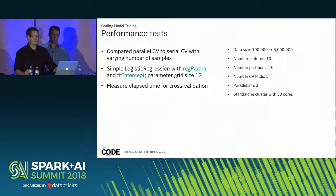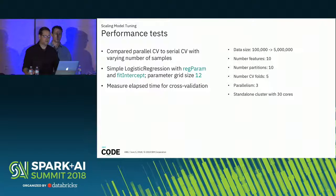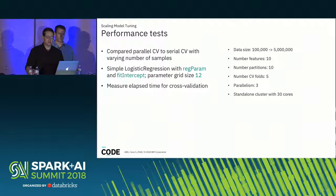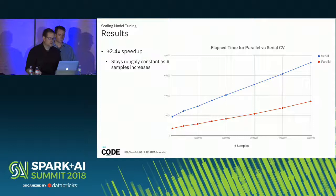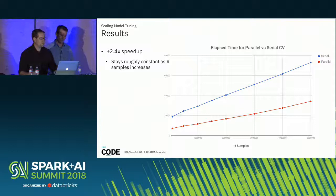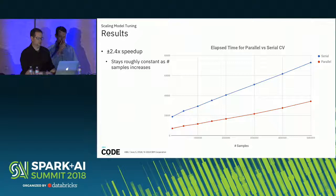We ran some performance tests to compare parallel CV to standard serial cross-validation on a Spark standalone cluster with 30 cores. We set the number of data partitions to 10, the parallelism parameter to 3, and a grid size of 12 parameters. We measured elapsed time to complete cross-validation while varying the dataset size from 100,000 to 5 million records. Our results showed about a 2.4 times speedup, and that remained pretty consistent as data size increased. We didn't quite reach our parallelism of 3, but got pretty close — probably due to some additional overhead in the process.